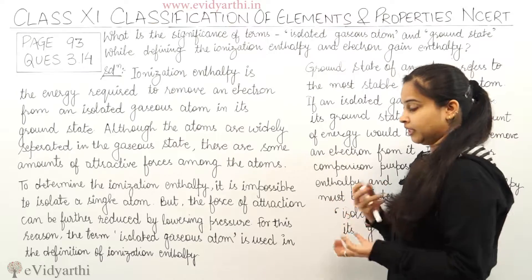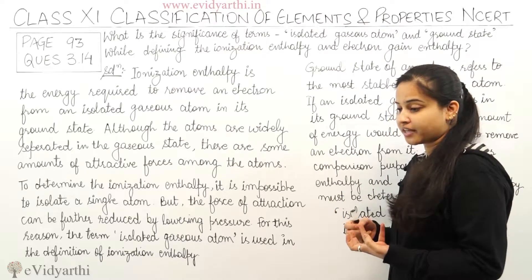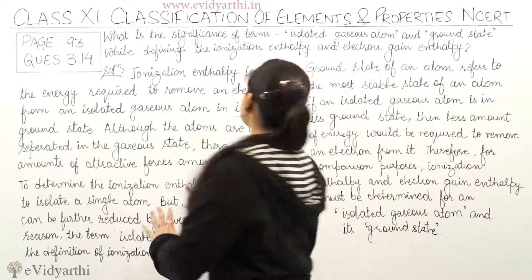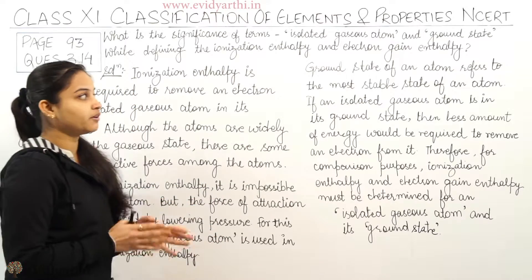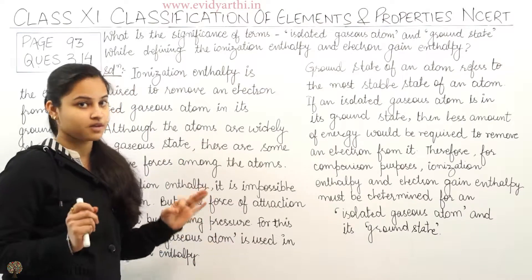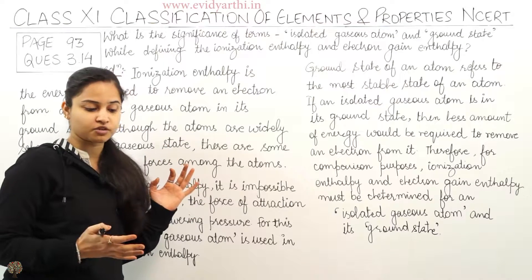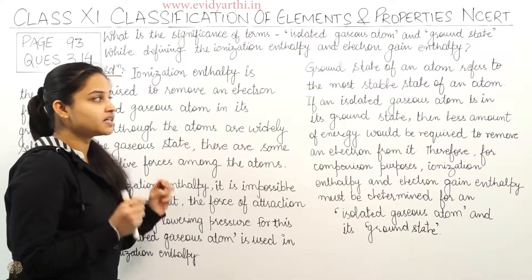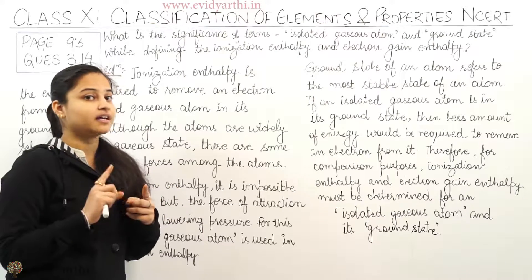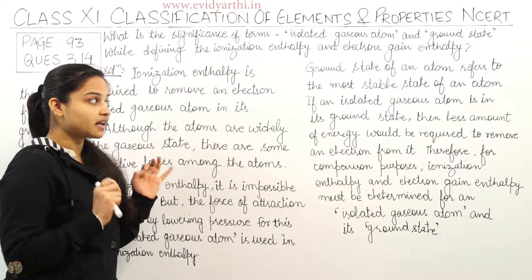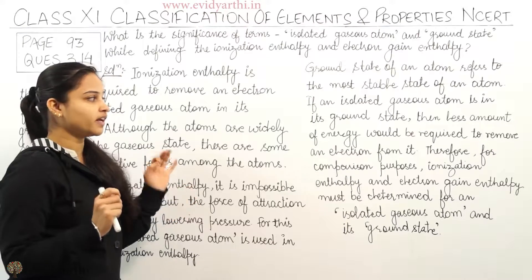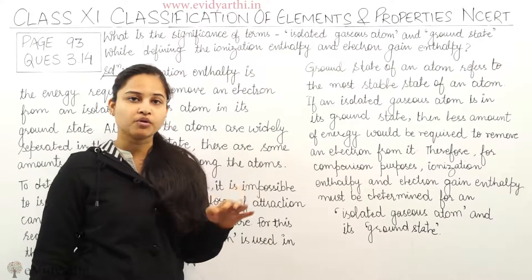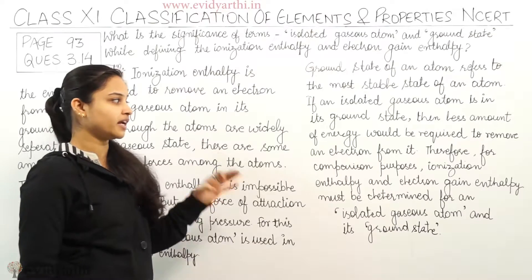I hope the significance of the term 'isolated gaseous atom' and why we use it in ionization enthalpy is now clear. Moving on to the second term — the ground state of an atom refers to the most stable state of an atom. If an isolated gaseous atom is in its ground state, then less energy would be required to remove the electron from it.